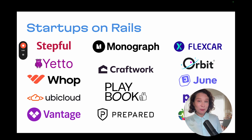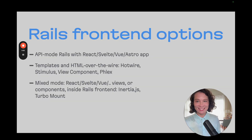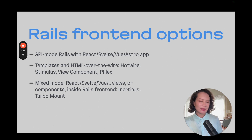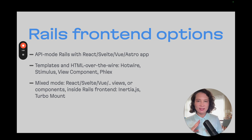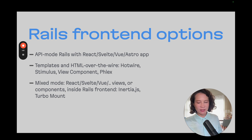But this productivity and happiness has to include front-end. In terms of the front-end, Rails has a few different options. One is dual stack or the API-only mode of the Rails application that then integrates through this API with a front-end application — React, Svelte, Vue, Astro, etc.